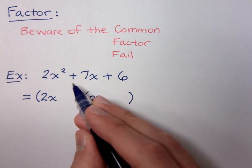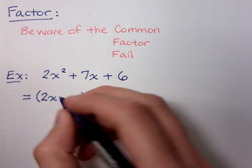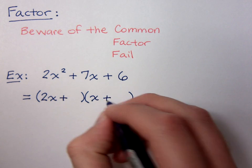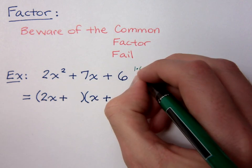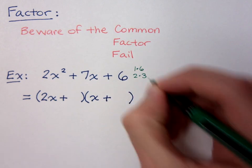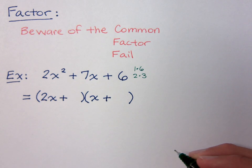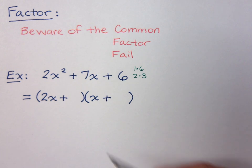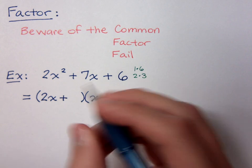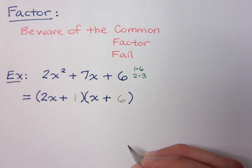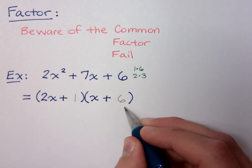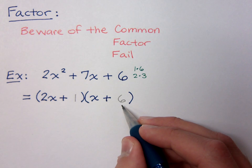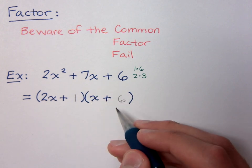The next thing you want to do is look at the signs. Since everything is positive, we know that we must use positives. Now when I look at the 6, I can look at this as 1 times 6 or 2 times 3, and I just need to figure out what's going to be the best option. If I use the 1 and the 6, I can put the 1 here and the 6 here. When I check this, I get 1x on the inside and 12x on the outside — 1 and 12 gives me 13, not 7. So I know this doesn't work.